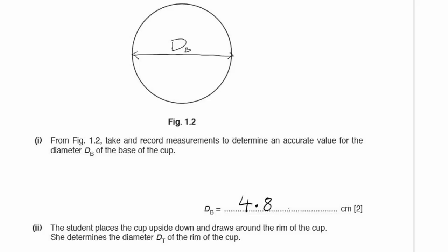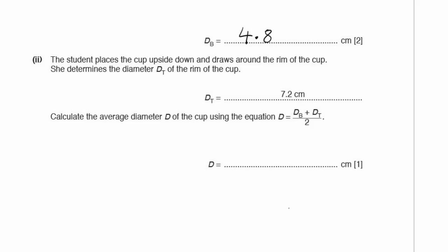Part 2. The student places the cup upside down and draws around the rim. She determines the diameter dt of the rim of the cup, and that's 7.2 cm. Calculate the average diameter d using the equation d equals dB plus dt divided by 2. So d is 4.8 plus 7.2, they're both cm, divided by 2, and that'll give you a value of 6.0 cm. We've got two significant figures, two significant figures, so I'm using two significant figures here.